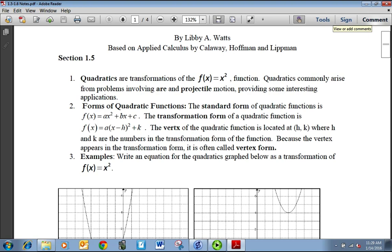There are a couple different forms of quadratic functions. We have the standard form, ax squared plus bx plus c, and we also have the vertex form. It's called vertex form because when it's in that form it's really easy to pinpoint what the vertex is, because the vertex is going to be h and k, where h and k are the numbers in the transformation of the function.